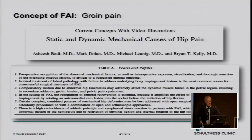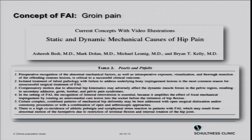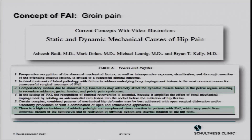There is also an association between femoroacetabular impingement and groin pain. Together with Brian Kelly from HSS in New York and Ashish Bedi, we wrote a paper showing that compensatory motion due to abnormal hip kinematics may adversely affect dynamic muscle forces in the hip region, resulting in secondary abductor, groin, lumbar, and pelvic pain syndromes. There is also a high coincidence of athletic pubalgia and symphyseal stresses — for example in soccer players — in patients with FAI, which may result from abnormal motion due to restrictions within the hip joint.